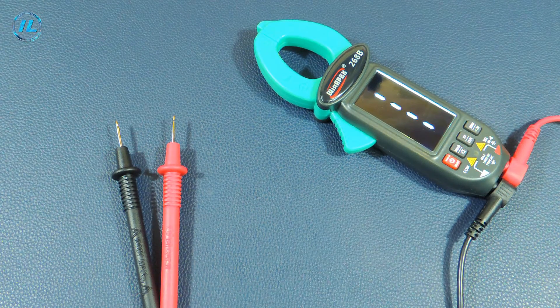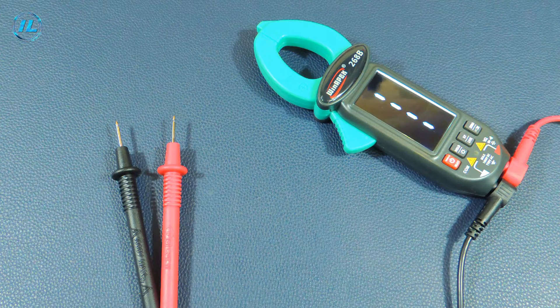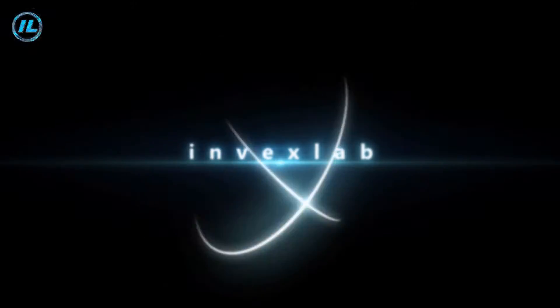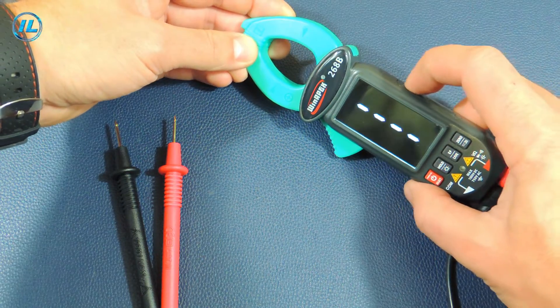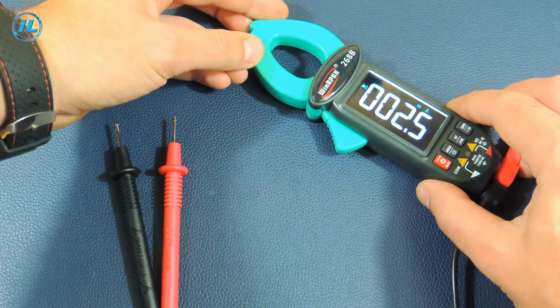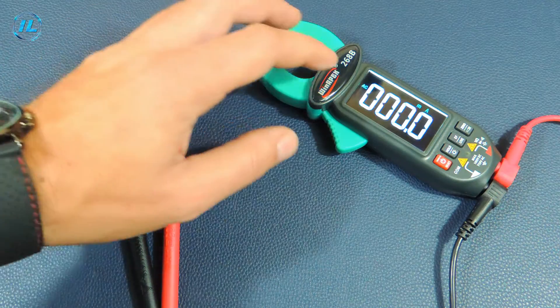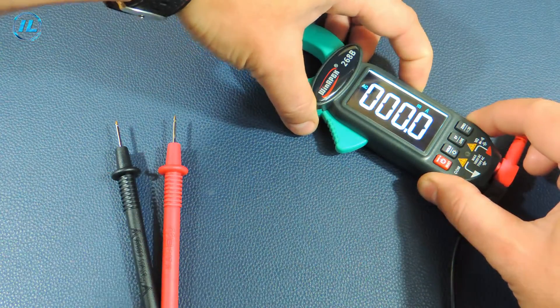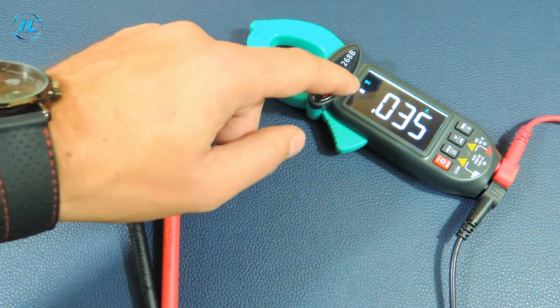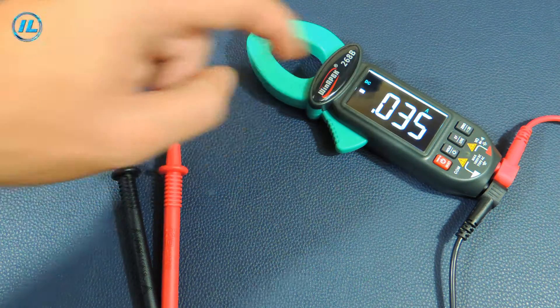The next time the button is pressed, the device goes into standby mode. To measure the current strength, you need to briefly press this button. At the beginning, the AC measurement mode is activated. The next time you click, we switch to the DC measurement mode.